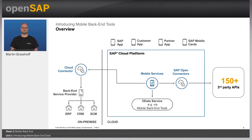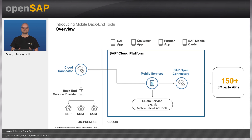We have discussed the general architecture of mobile solutions. You have mobile services usually in the middle of this universe — in this situation, it's SAP Cloud Platform. You have the applications on top, and you connect to various backend systems. During our course, we will use our own backend system that runs directly on SAP Cloud Platform, and we will create this backend using the mobile backend tools, which comes as part of the mobile services.